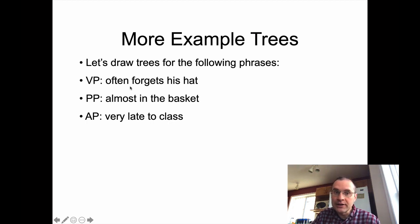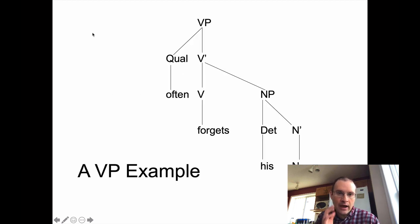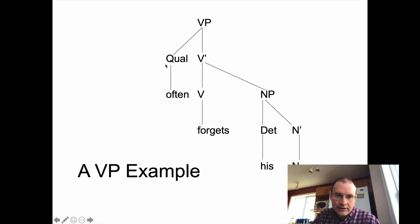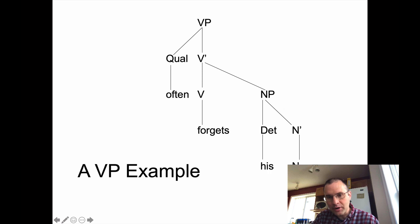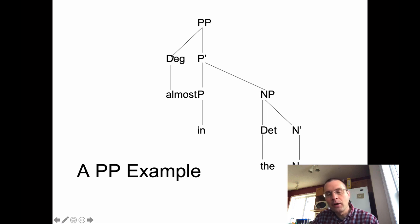For 'often forgets his hat' as a verb phrase: the head is the verb 'forgets.' The specifier is 'often' — a qualifier word — which links up to the mother node VP at the top. The NP complement 'his hat' links up to the V-bar after the head. 'His hat' breaks down the same as 'the book': determiner followed by N-bar leading down to the head noun 'hat.' That NP functions as the complement of this VP headed by 'forgets.'